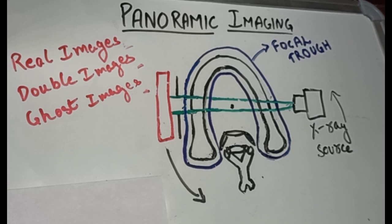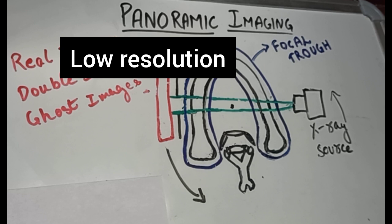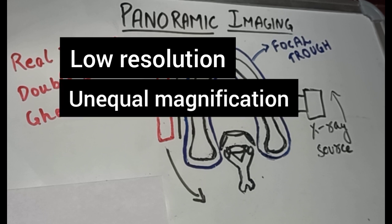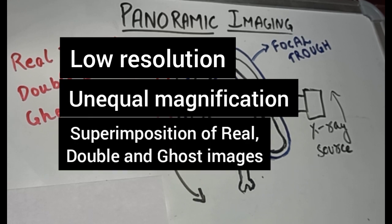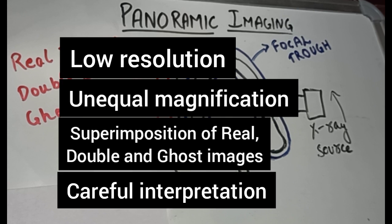Disadvantages include: lower image resolution compared to intraoral radiographs, unequal magnification across the image making linear measurements unreliable, superimposition of real, double, and ghost images requiring careful visualization to interpret anatomical and pathological details, and difficulty imaging both jaws when the patient has severe maxillofacial discrepancies.